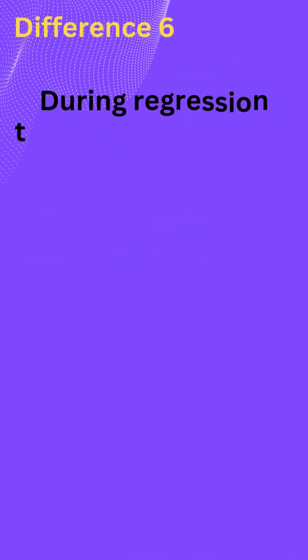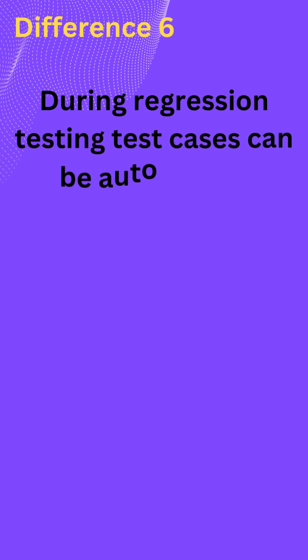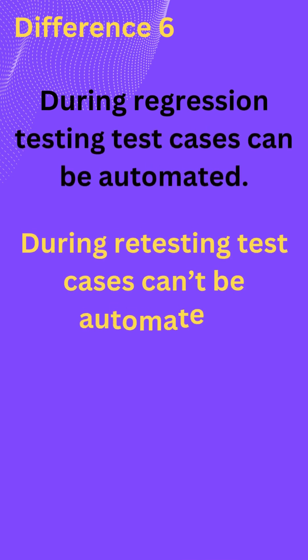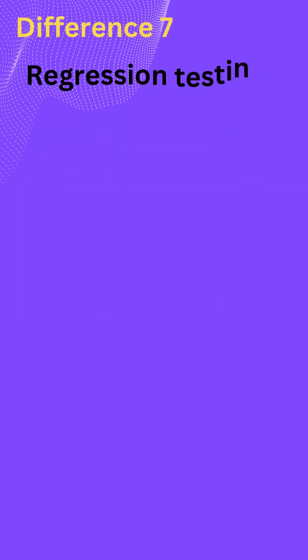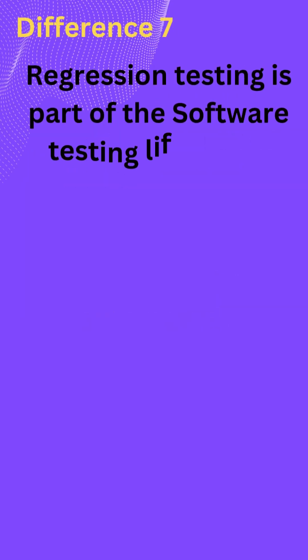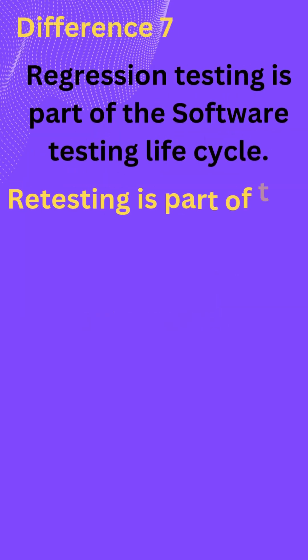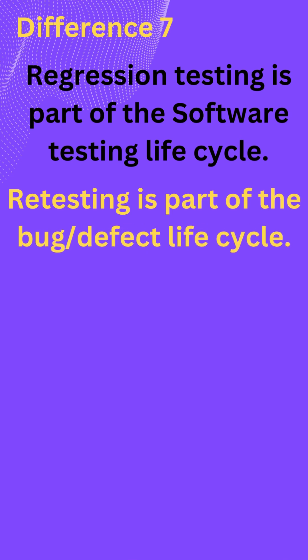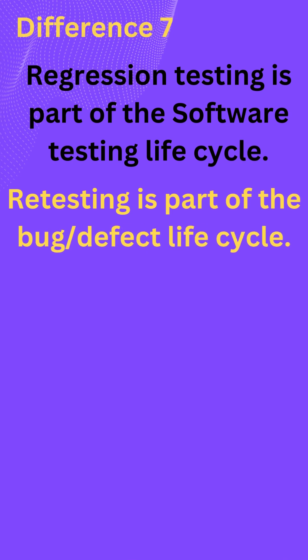During regression testing, test cases can be automated. During retesting, test cases can't be automated. Regression testing is part of the software testing lifecycle. Retesting is part of the bug or defect lifecycle.